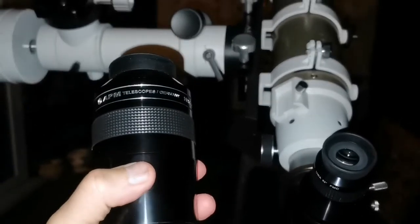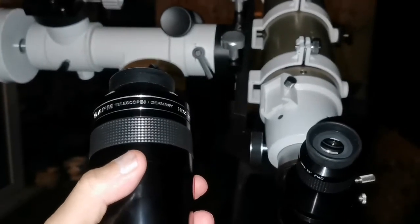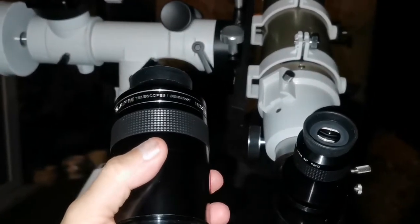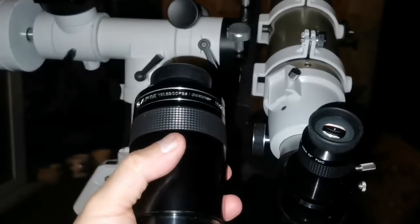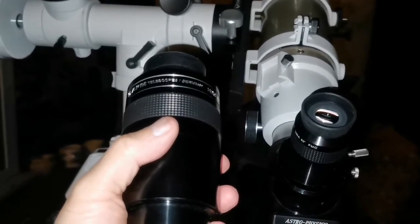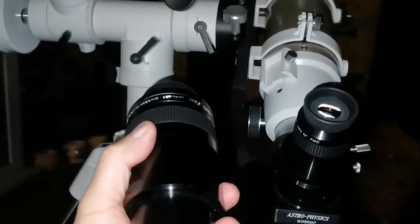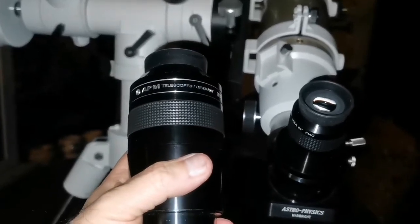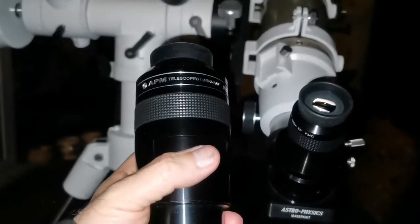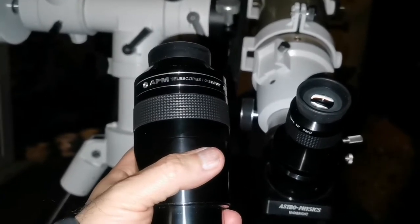I was using the APM 20mm to find M51 in Canes Venatici. And from Alcor, you know, at the end of the Big Dipper handle, and then you go toward south and find it.